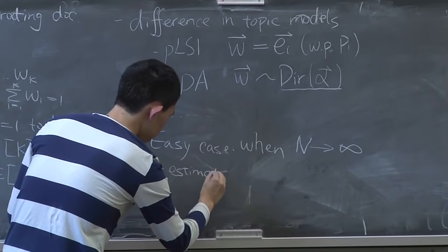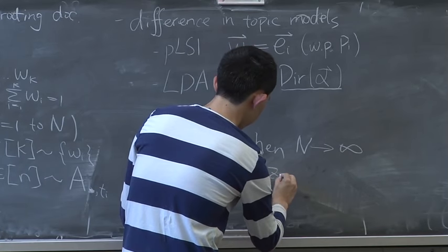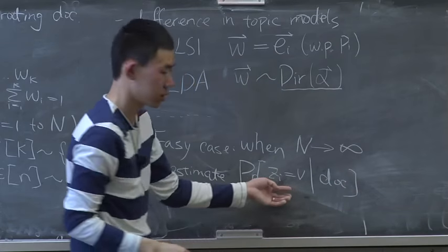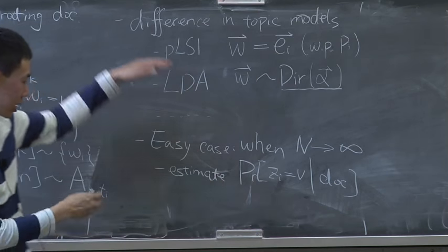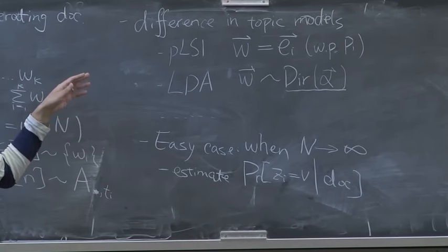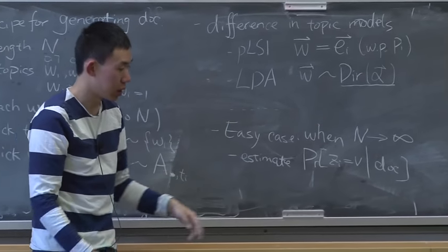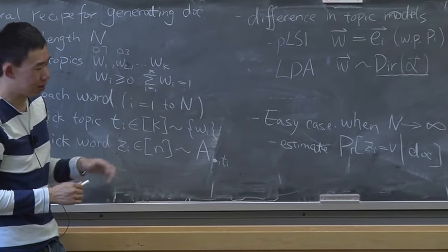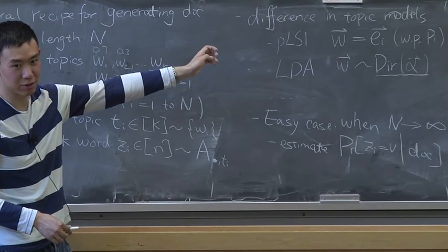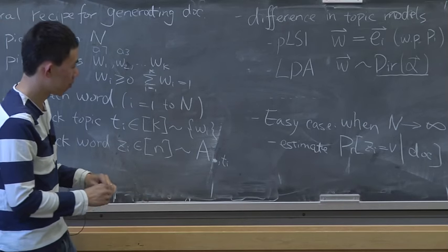We can estimate the probability of word z_i being a particular word v, conditioned on being chosen from this document, by looking at how many times this word appeared divided by the document length. If the document is really long — comparable to the size of the vocabulary — this will be a fairly good estimate. For now, let's work with that assumption.